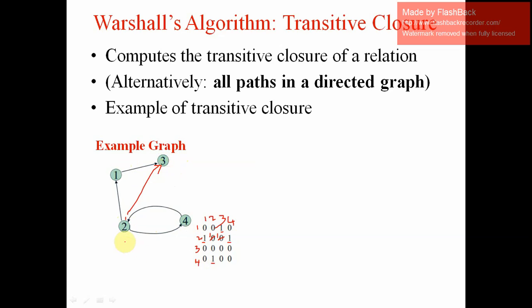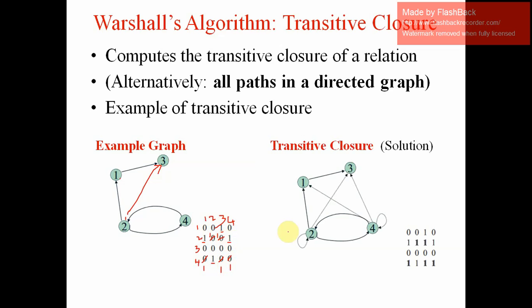For node 4: 4 to 2 is connected and 2 to 1 is connected, so 4 to 1 has a path. 4 to 2 is already 1. For 4 to 3: 4→2→1→3, so there is an indirect path — change to 1. For 4 to 4: 4→2→4 forms a loop, so 4 to 4 is connected. This resulting matrix is called the transitive closure.